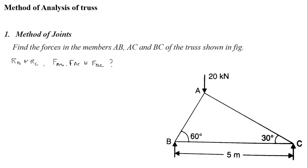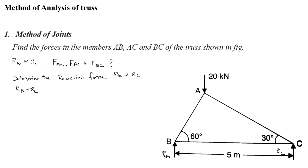First, we have to determine the reaction forces RB and RC. Consider triangle ABC. Two reaction forces are there: RB and RC. The equilibrium equation gives RB plus RC equals 20 kilo Newton (the downward load). This is equation one.